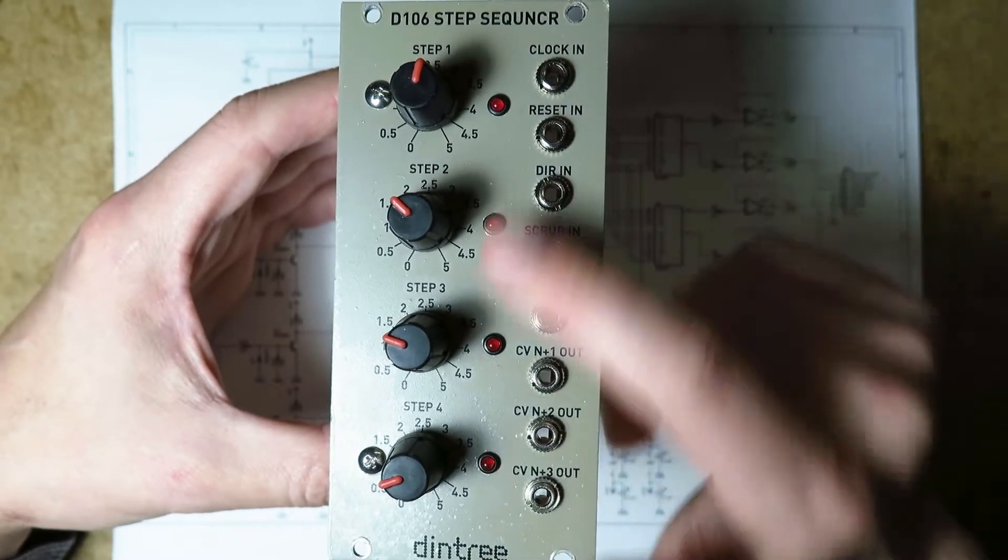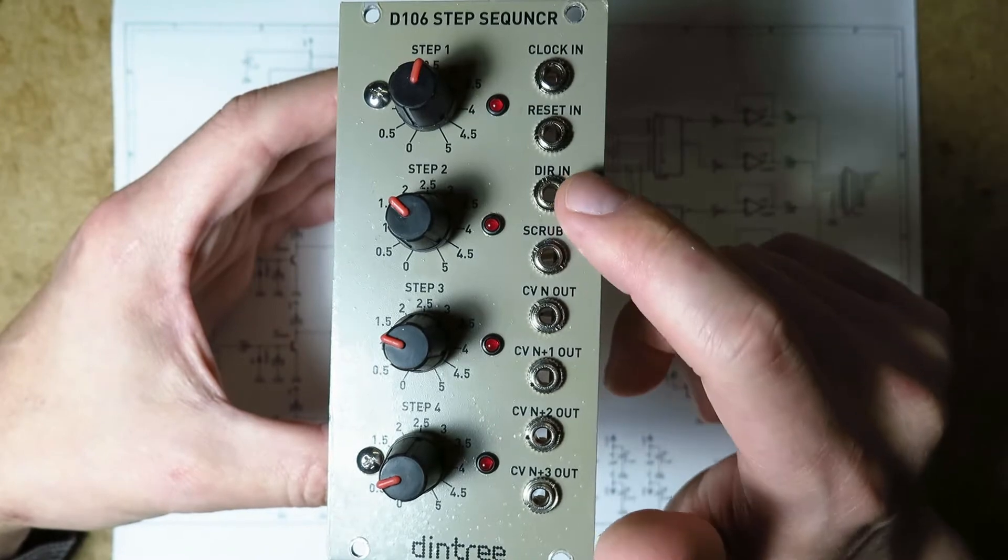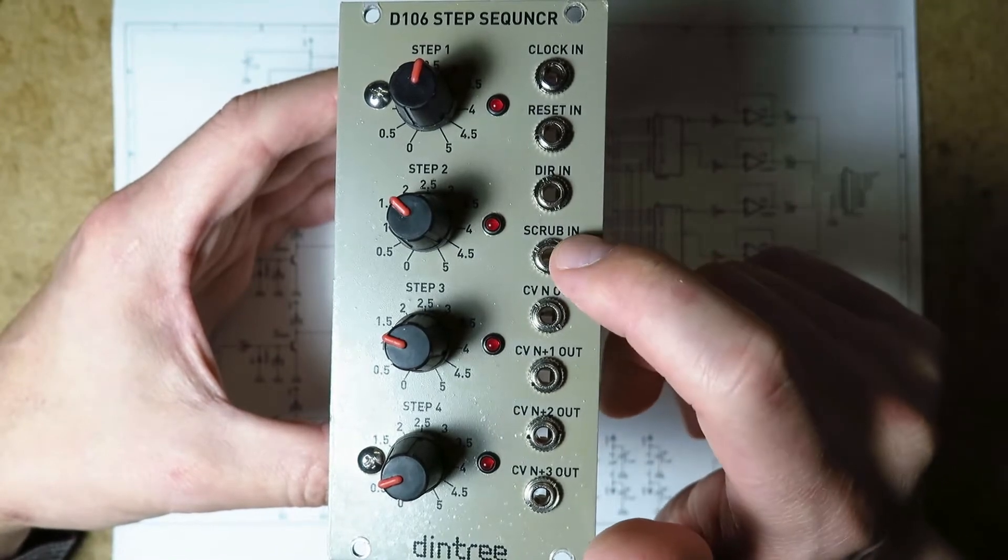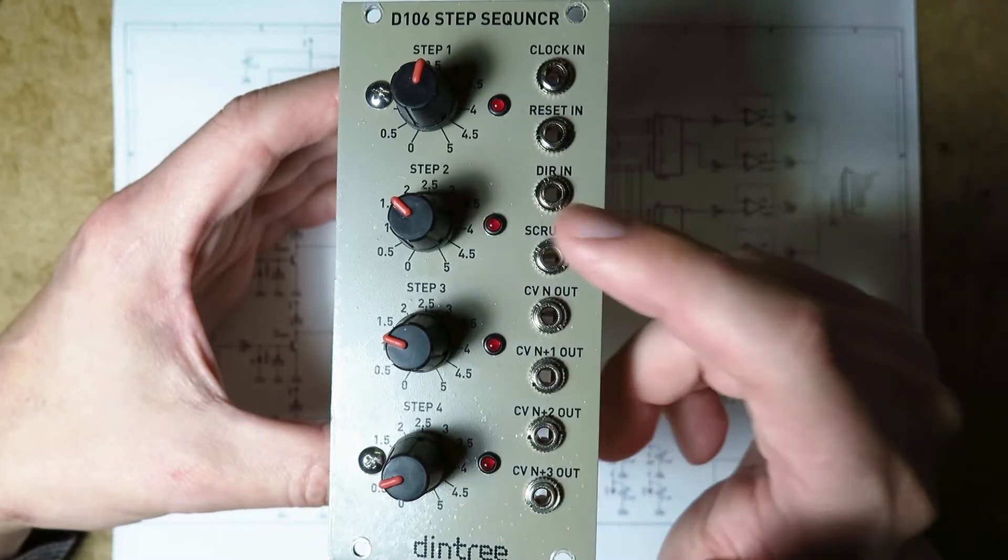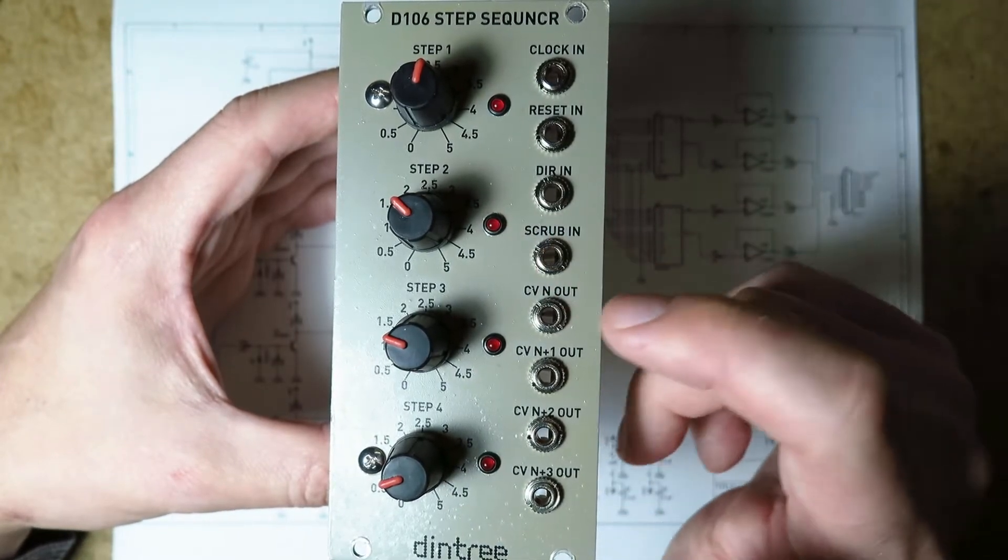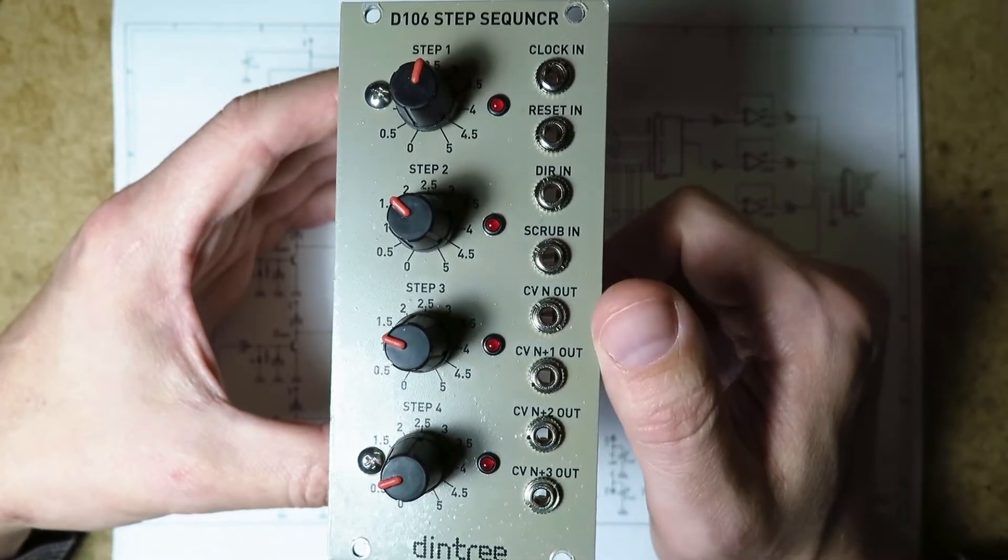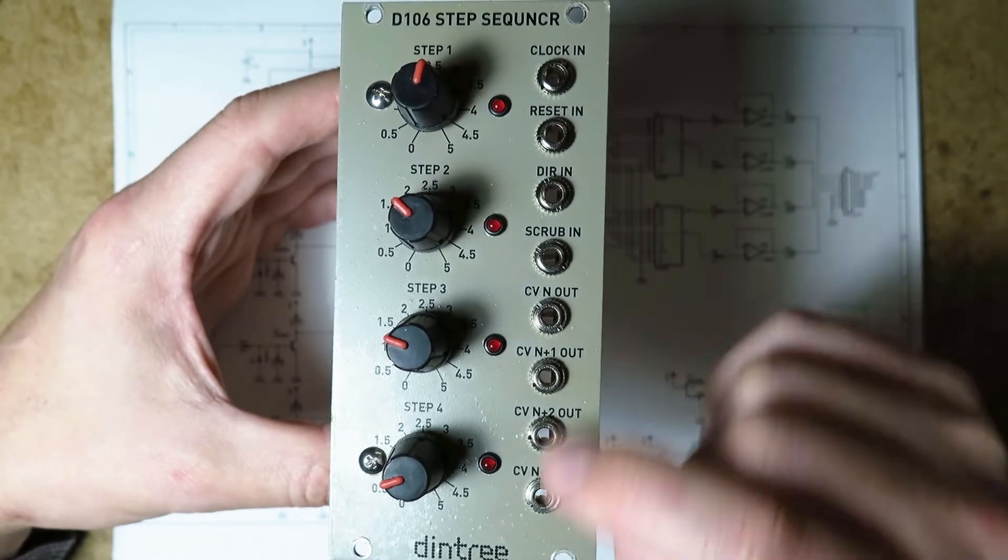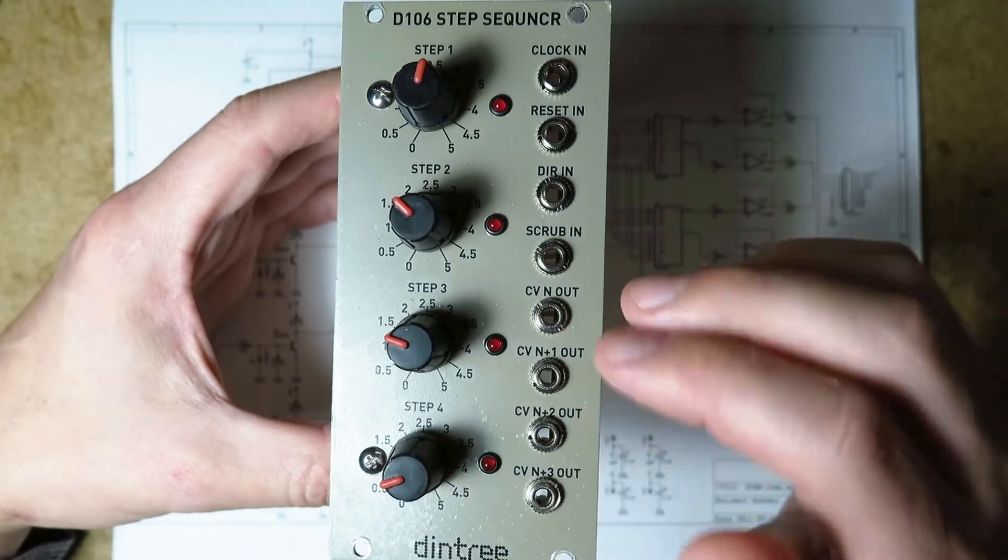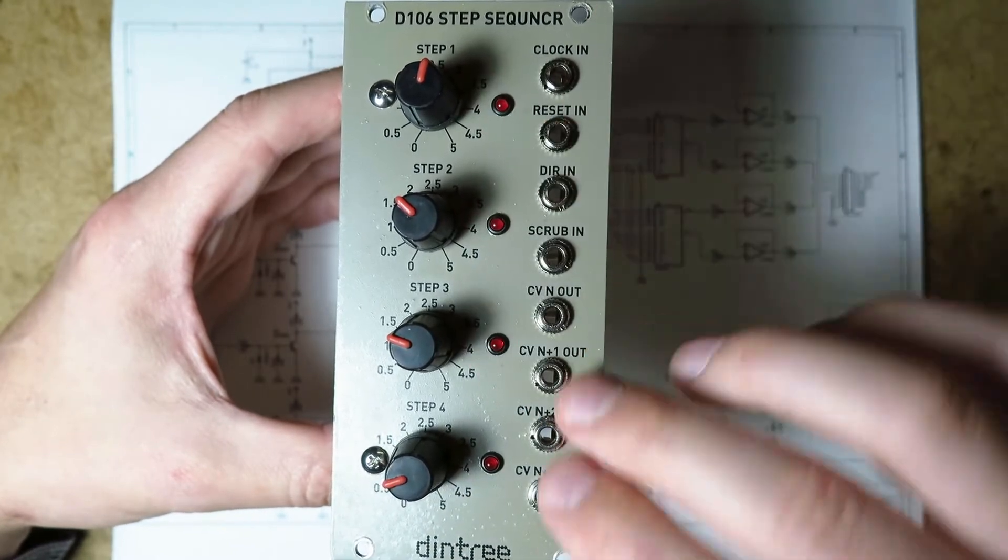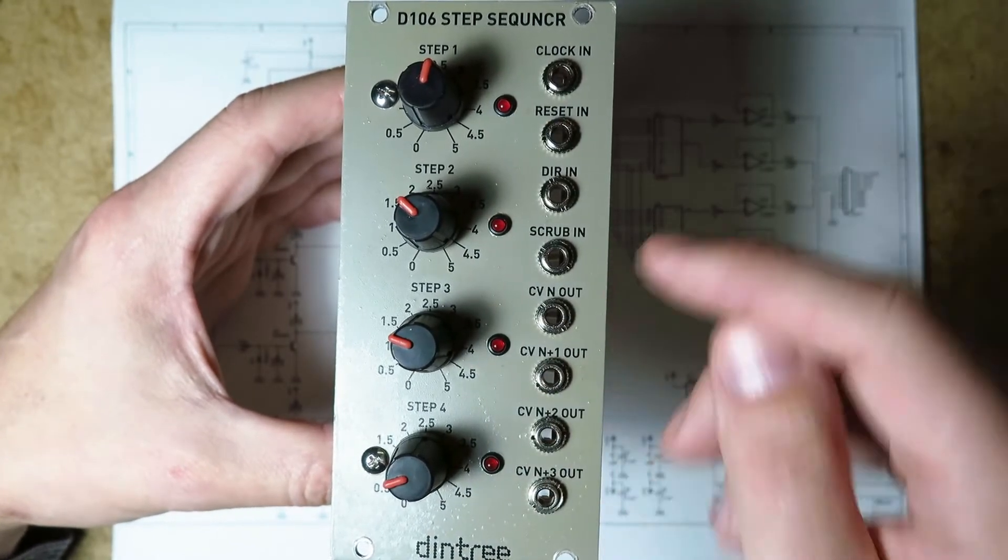Direction in, which causes it to run in the opposite direction if there's a signal present on there. And scrub in, which lets you go back and forth between the stages using a voltage instead of by stepping it. And then there's four outputs, and the outputs correspond to the four pots, except every time you take a step, the outputs all rotate around by one position.